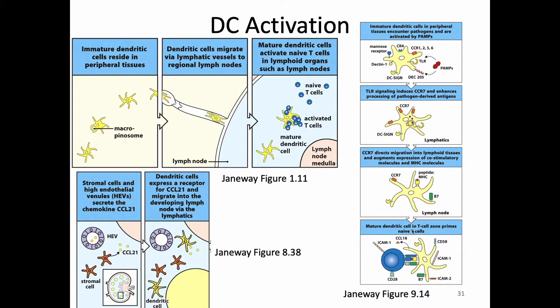I left off talking about dendritic cell activation last time. Dendritic cells can be either immature or mature. They start out as immature dendritic cells in different tissues, and they are able to do a lot of phagocytosis at that point. After they do phagocytosis, if they encounter a PAMP or a MAMP in their phagocytosis process, they will get activated. That will make the dendritic cell travel to the lymph node and also be activated to have a lot more proteins on the cell surface.